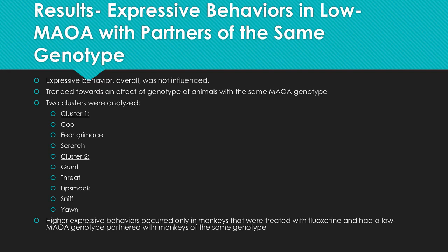The amount of expressive behavior was not influenced by fluoxetine, but showed a trend toward effects of partner genotype and an interaction between MAOA genotype and partner genotype. Two behavioral clusters were observed and compared: cluster one included coo, fear grimace, and scratch; cluster two included grunt, threat, lip smack, sniff, and yawn. A fluoxetine-by-partner-genotype interaction occurred only in monkeys with low MAOA genotype, reflecting a much higher frequency of expressive behaviors in fluoxetine-treated monkeys whose partners also had low MAOA genotype.